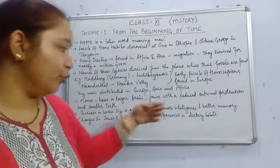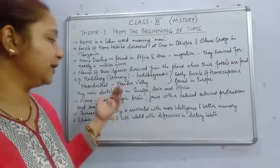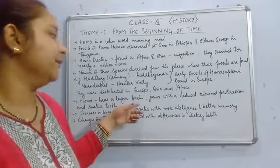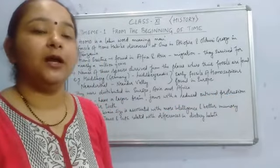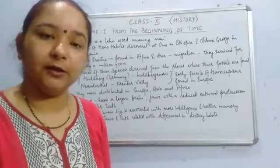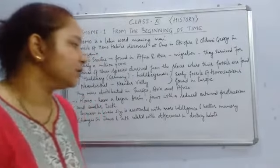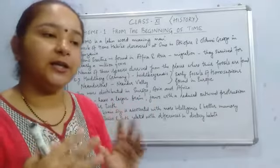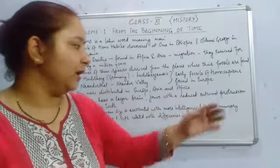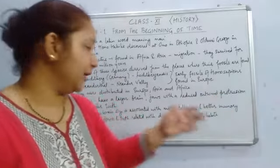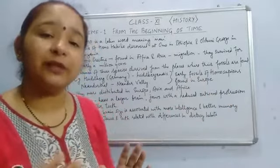Compared to australopithecus, homos had a larger brain, which indicates more intelligence, better memory, and better thinking capacity. Their jaws also showed a reduced outward protrusion. There is an image in the textbook showing the skulls of different species of human ancestors, illustrating how the jaw size reduced. In australopithecus, the jaw had much more outward protrusion, whereas in homos this outward protrusion is comparatively less.